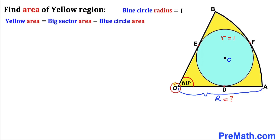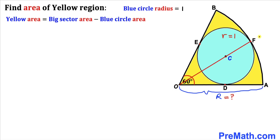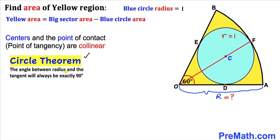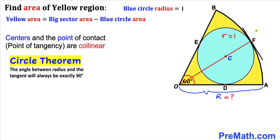Let's connect center O with the point of tangency F. Keep in mind that centers O and C and point of tangency F are always collinear. According to the circle theorem, the angle between the radius and the tangent is always 90 degrees. OF is the radius of the sector (uppercase R), and CF is the radius of the blue circle, equal to 1. Since the tangent makes 90 degrees, points O, C, and F are collinear.